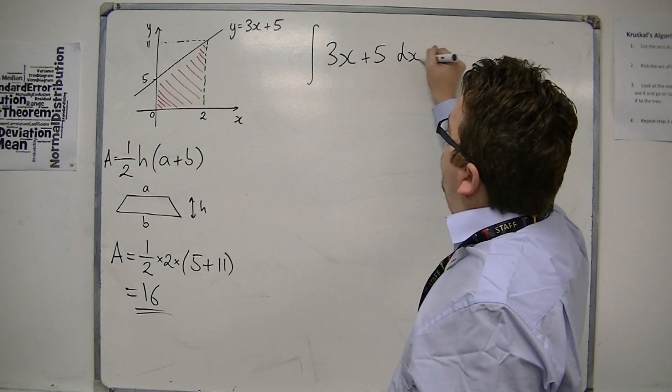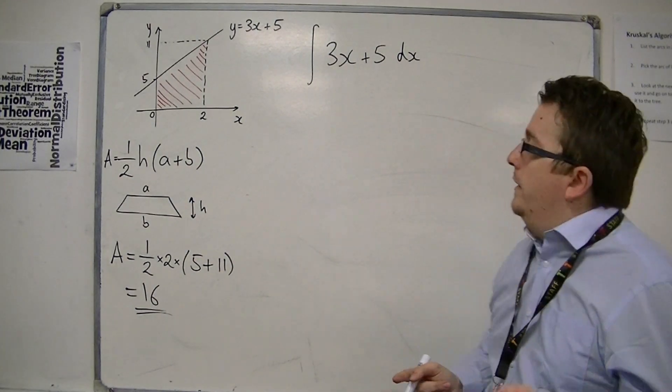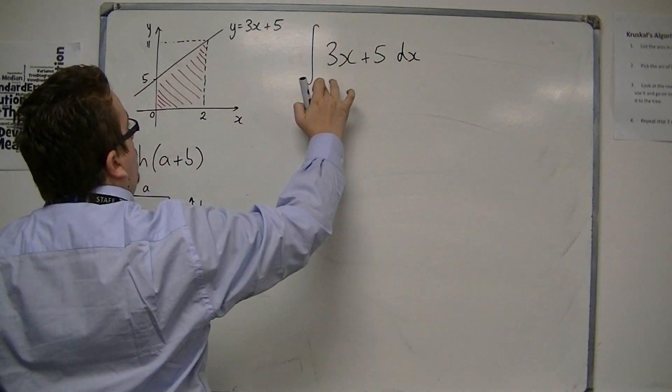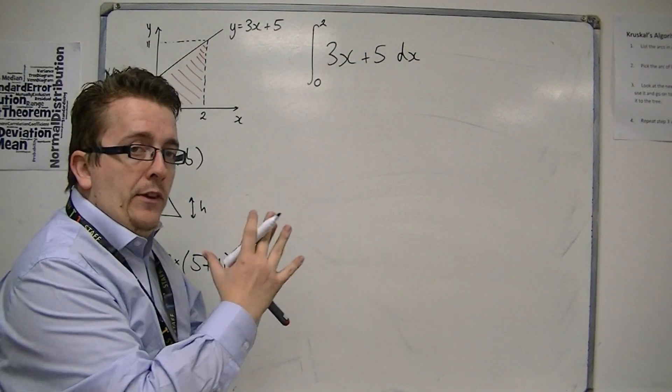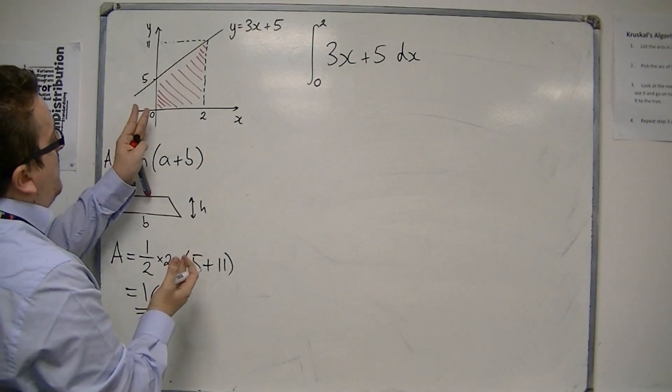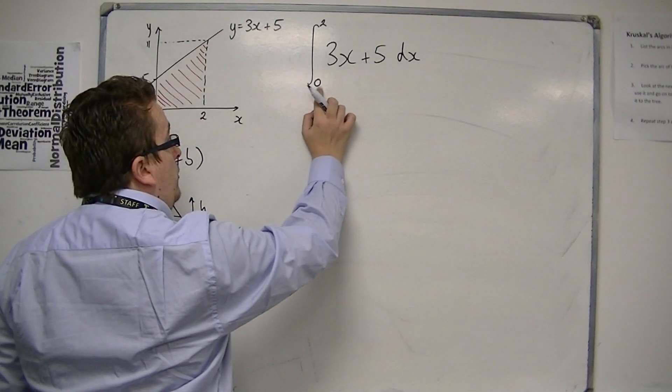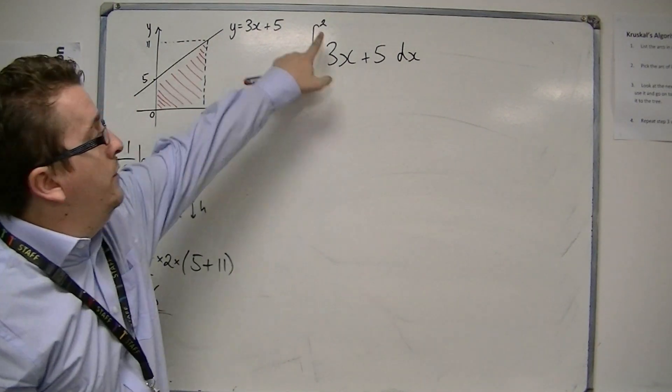And this is where it's going to differ slightly, because I'm now going to introduce limits to the integral, which tells me which values of x I'm integrating between. So I'm integrating between 0 and 2. The smaller value goes on the bottom, the larger value goes on the top.